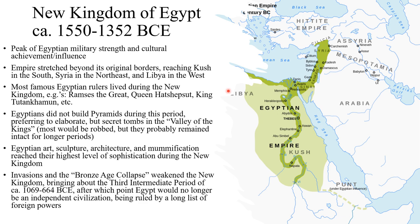Egyptians did not build pyramids during this period. Instead, they preferred to build elaborate but secret tombs in the Valley of the Kings. Most of these tombs would be robbed as well, but they probably remained intact for longer periods than the pyramids. Egyptian art, sculpture, architecture, and mummification reached their highest level of sophistication during the New Kingdom.